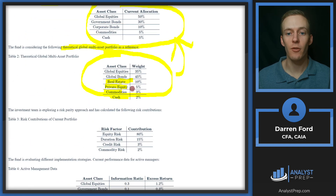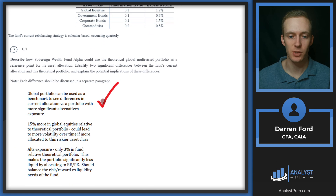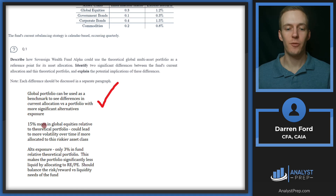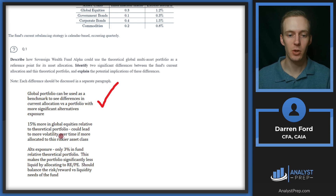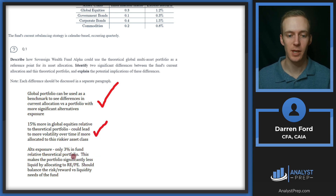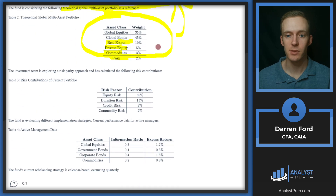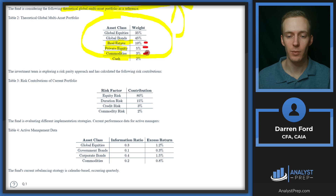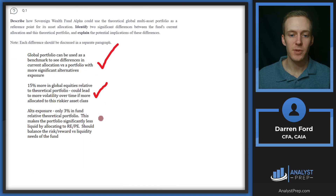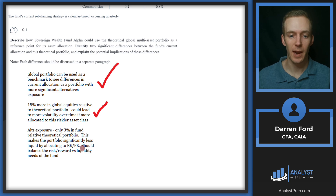You could go a fair number of ways with this. The two answers I went with were on global equities and alternatives exposure. So 15% more global equities relative to the theoretical portfolio could lead to more volatility over time by being allocated to this riskier asset class. And then alternatives exposure — only 3% in the fund relative to the theoretical portfolio, which was about 18% combined across real estate, private equity, commodities and cash. This makes the portfolio significantly less liquid; allocating to real estate and private equity should balance the risk-reward versus liquidity needs of the fund.